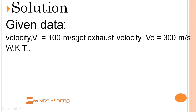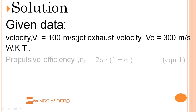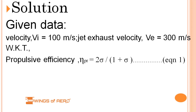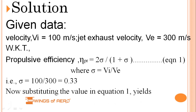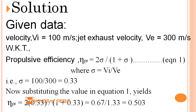Let's see the solution. Given: flight velocity is 100 m/s and jet exhaust velocity V_E is 300 m/s. We know that propulsive efficiency η_PR equals 2σ divided by (1 + σ), where sigma is the speed ratio V_I divided by V_E. So sigma equals 100 divided by 300, which is 0.33. Substituting into the equation: η_P equals 2 × 0.33 divided by (1 + 0.33), giving approximately 0.503, or about 0.5.